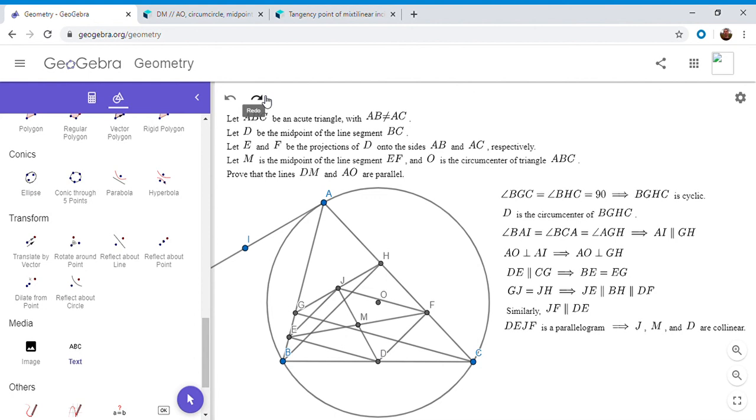So since DM and J are collinear, like I mentioned before, since D is the circumcenter of BGHC, DJ has to be perpendicular to GH, because the center of a circle, if you connect it to the midpoint of a chord, GH in this case, the line connecting it has to be perpendicular to that chord. So this is just writing that out. GJ equals JH. So DJ has to be perpendicular to GH. And now we're basically there.